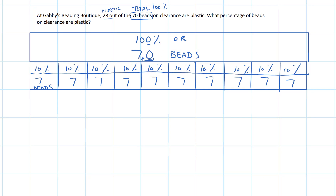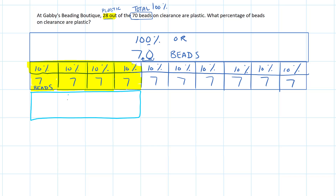Now we're looking for the percent, which is a little different from our other lessons. I want to figure out what percent 28 beads is going to be, so I need to skip count by 7s: 7, 14, 21, 28. I notice that 28 corresponds to 40%, so 40% represents 28 beads.